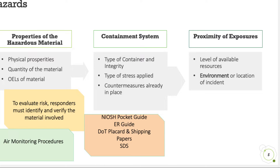Look at the container: what's its integrity, what kind of stress is being applied — heat, cold, pressure — and are there countermeasures already in place? The NIOSH pocket guide is invaluable, especially if you can get the CAS number off your safety data sheet. If not, you use the emergency response guide, which doesn't always provide as much fidelity as an SDS. Hopefully you can get placards or markings off the container, as well as shipping papers if it's rolling. What are the proximity of exposures, resources available, and can you control the environment or location?